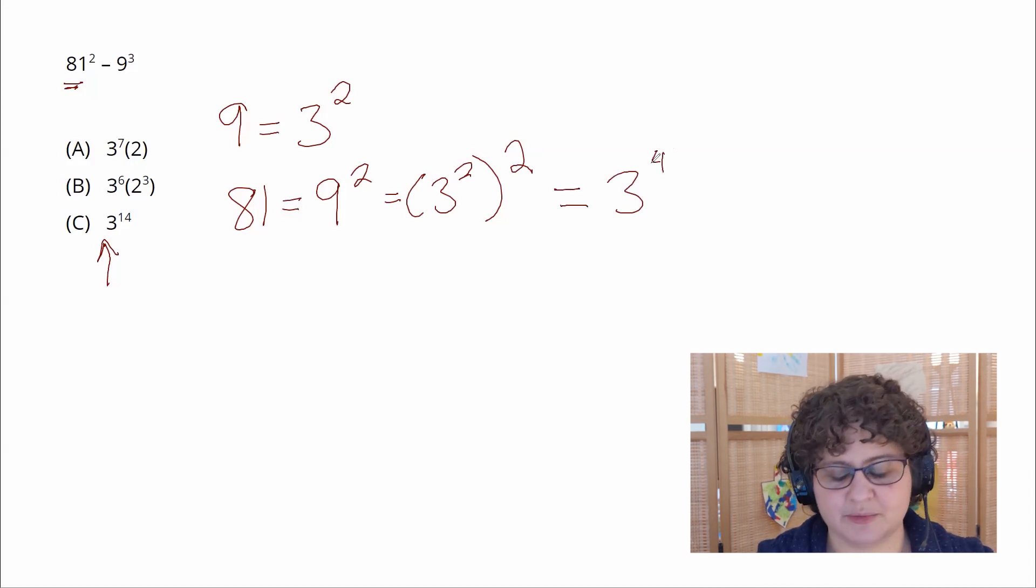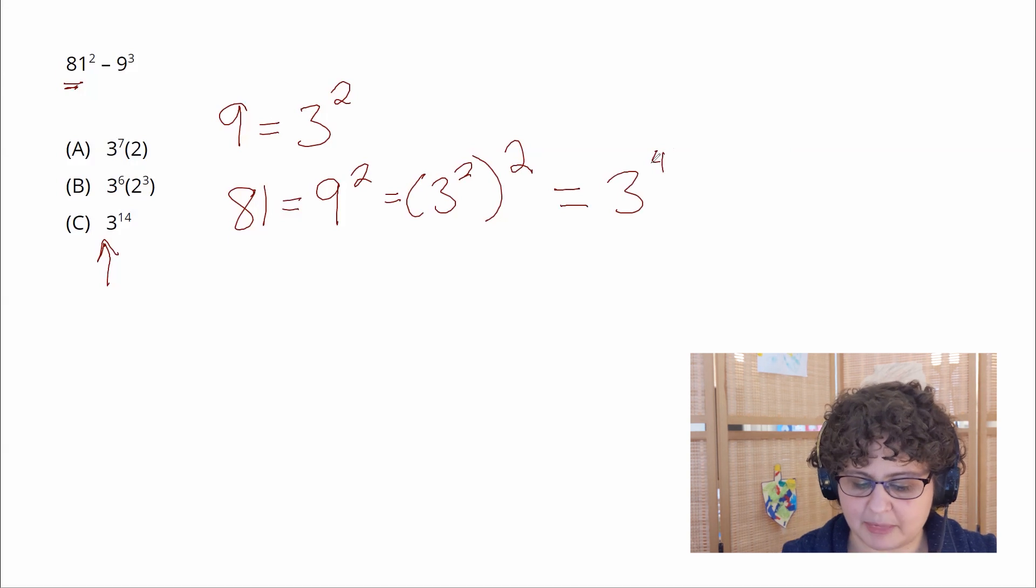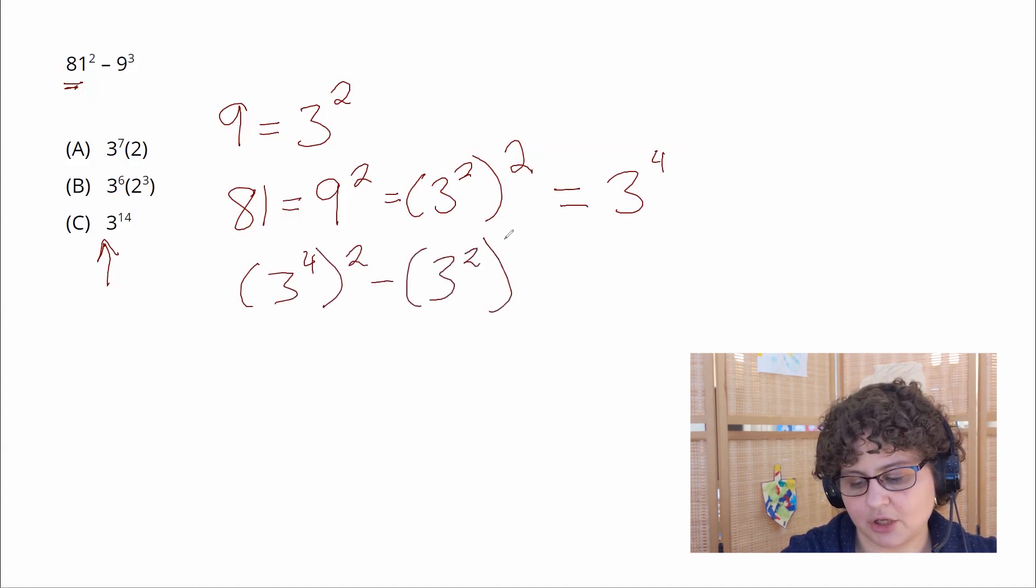So now I have all the terms with a base of 3. Let me put them back into the original problem. So 81, 3 to the fourth squared minus 9, 3 squared cubed.